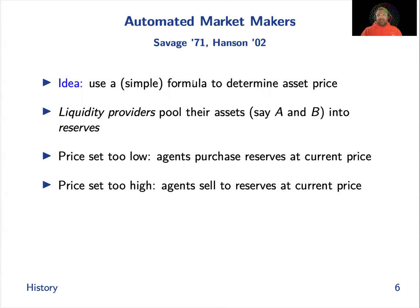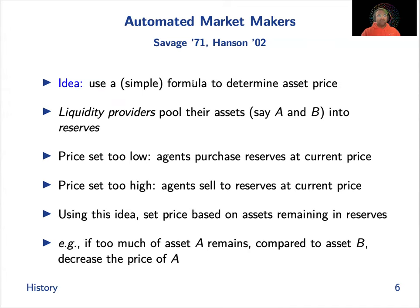So one question is: could we replace these market makers with automated market makers that, given liquidity, can automatically price things without needing a human providing bids and asks? You can, and one thing you may want is some desired qualities like bounded loss — you can bound the worst-case loss that the market maker takes — liquidity sensitivity, where if there's a lot of liquidity the price shouldn't move too much, and small storage requirements, reducing storage from linear to constant.